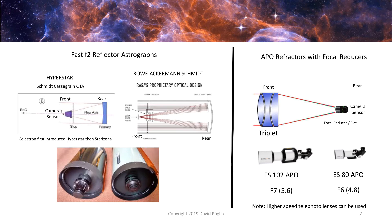There are essentially two categories: reflectors and refractors. On the left-hand side, we're going to be talking about the fast F2 reflector astrographs. There are two popular ones out there — there are others, but these are the very popular ones.